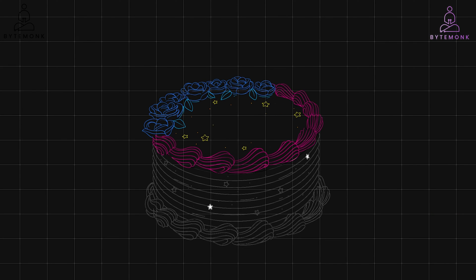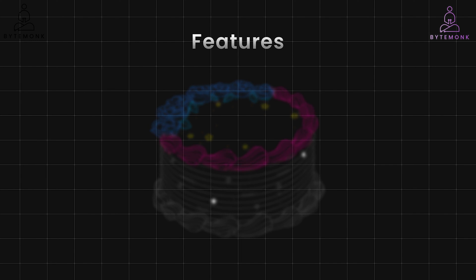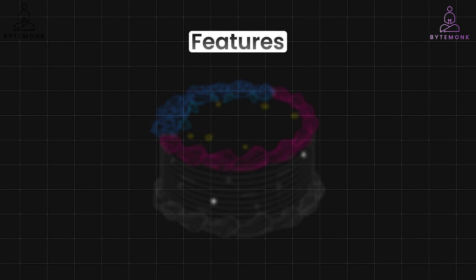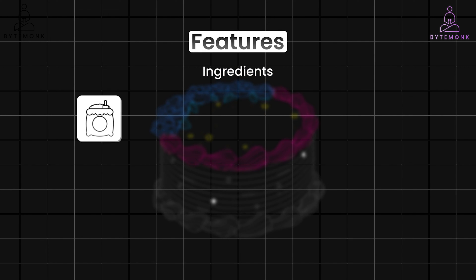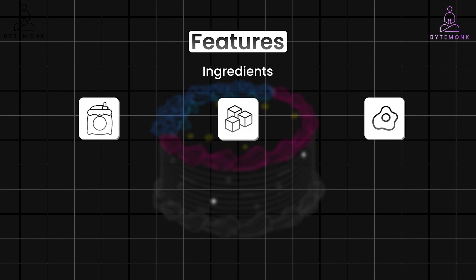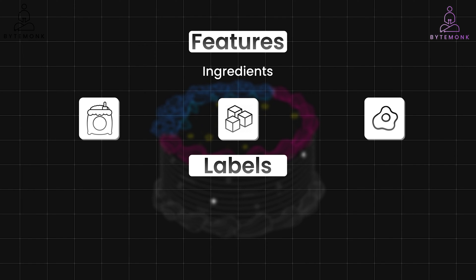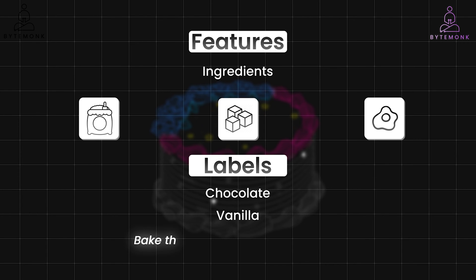Just imagine you are learning to bake a cake. The recipe, which represents the features, tells you the ingredients like flour, sugar, and eggs, and their quantities. But you also need to know the desired outcome, or label — that is, what kind of cake are you trying to bake? Is it a chocolate cake, a vanilla cake, etc.? By following the recipe and understanding the desired outcome, you can successfully bake the cake and make the prediction.